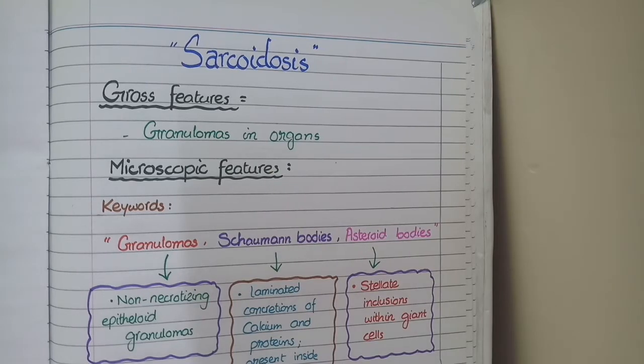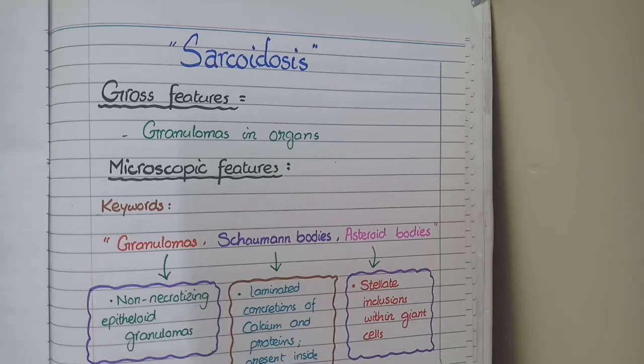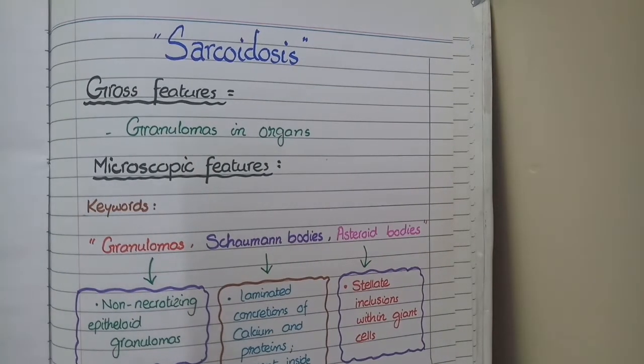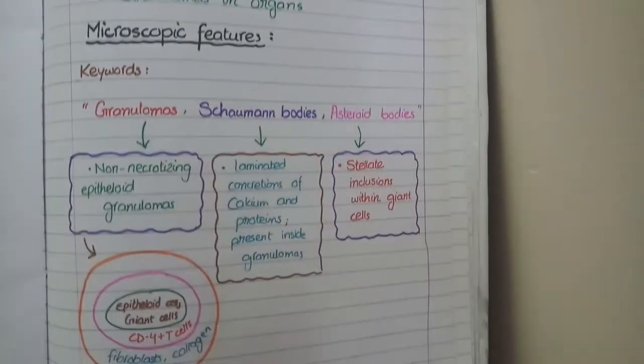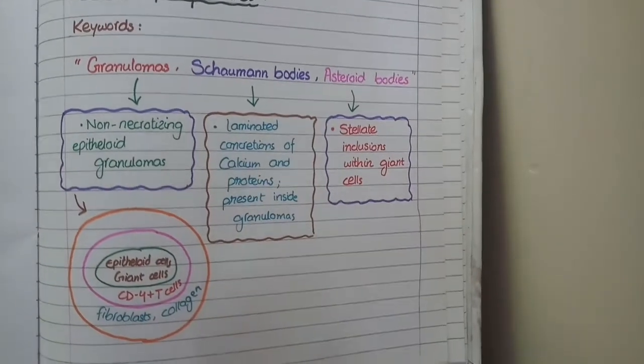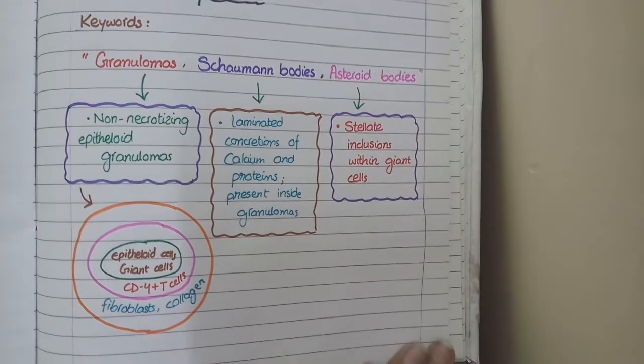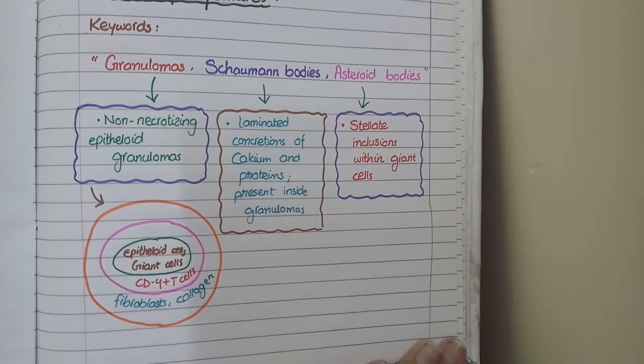For the microscopic features of sarcoidosis, you need to focus on three elements of its morphology: granulomas, Schaumann bodies, and asteroid bodies.